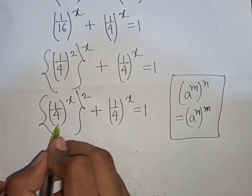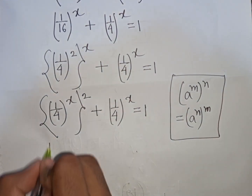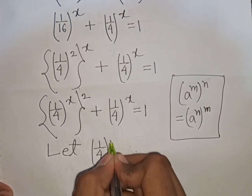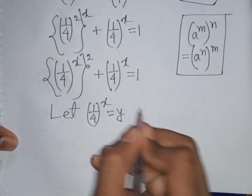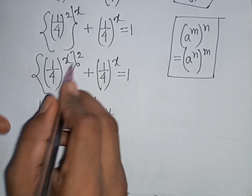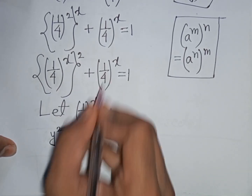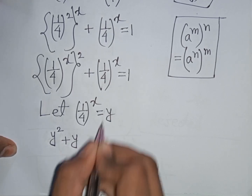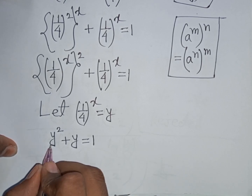We notice that (1/4)^x appears in both terms. So we let y equal (1/4)^x as a substitution.